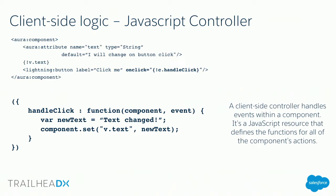The client-side logic is through the JavaScript controller shown in the bundle. Any actions or interactions can trigger JavaScript functions inside Lightning Components. For example, if you have a lightning button called 'click me' and you click on it, something should happen — you can say run this function and put that function inside your JavaScript controller. There is a particular syntax for that: put the function name, then pass the component and the event as parameters, then do whatever you want inside the function. For example, we are changing the value of a text attribute, which changes what it's displaying.